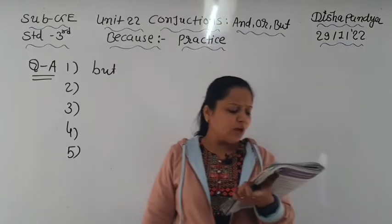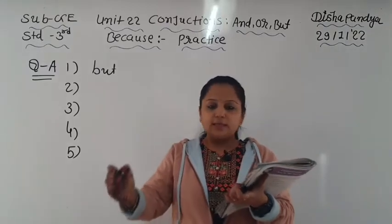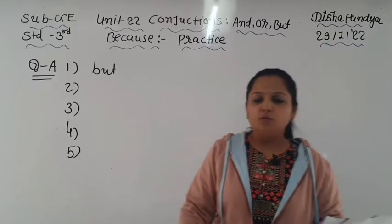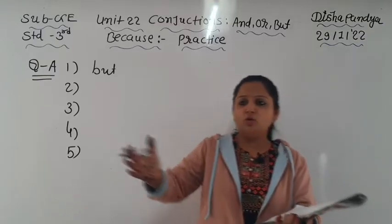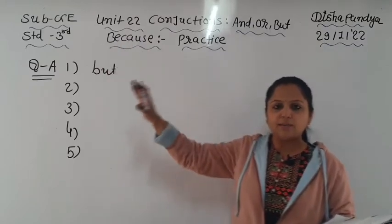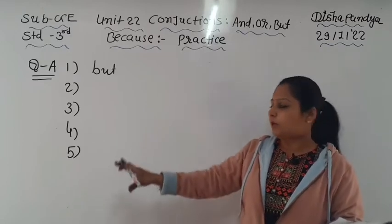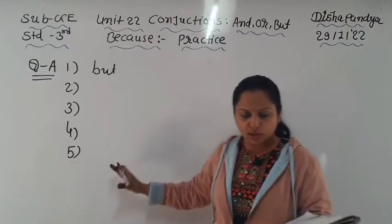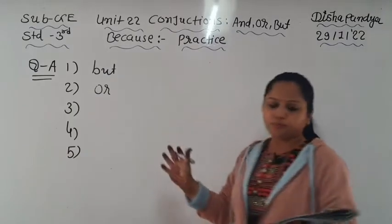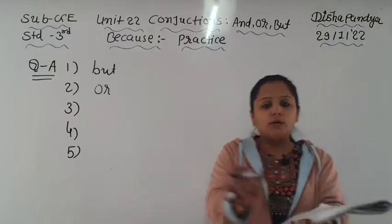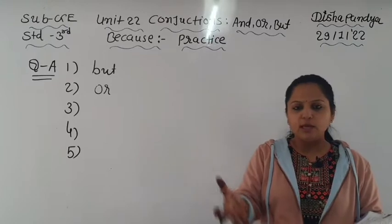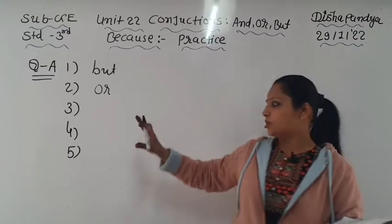Number two: 'We have one holiday this week. I can't remember if it is on Thursday blank Friday.' I don't know if it will be on Thursday or on Friday - we have a choice between two things. Whenever you choose between two things, we use 'or'. So the answer is: 'I can't remember if it is on Thursday or Friday.'